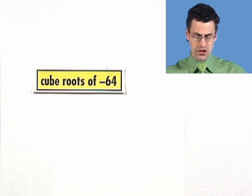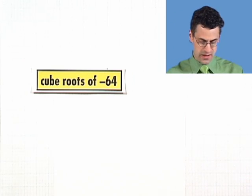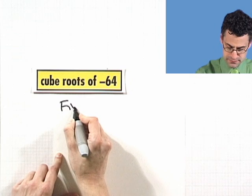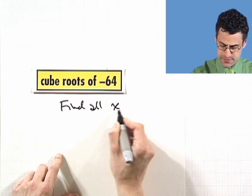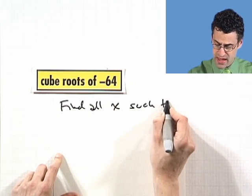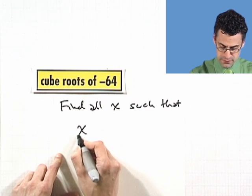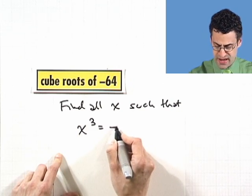Let's find all the cube roots of negative 64. So that means I want to find all x such that x cubed equals negative 64.